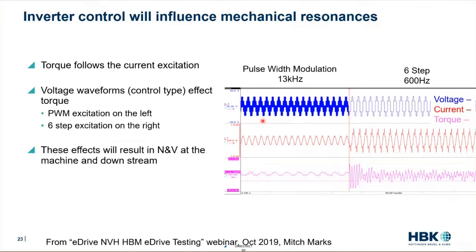This PWM signal is running at 13 kilohertz — turning on and off very quickly — and is being fed into the motor. The motor's inductance filters that high-frequency signal, creating a nice sinusoidal current shown in red — a very clean sine wave with probably some harmonics, but not too bad. Looking at the torque graph in pink below, we can see the torque has a little ripple action, probably caused by some harmonics, but it's not extreme.